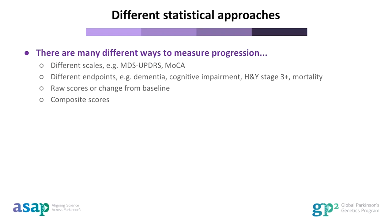You can also measure progression to particular endpoints such as clinical milestones. Some common ones are progression to dementia, cognitive impairment, Hoehn-Yahr stage 3 or greater, or mortality. Some of these, like mortality, are very easy to define, but others, like dementia or cognitive impairment, can be defined in many different ways. Some studies also use a cut-off point in a continuous scale to create a binary endpoint. Thirdly, you can also look at raw scores on a scale or change from baseline. Alternatively, you can try to make composite progression scores by combining data from lots of different scales.